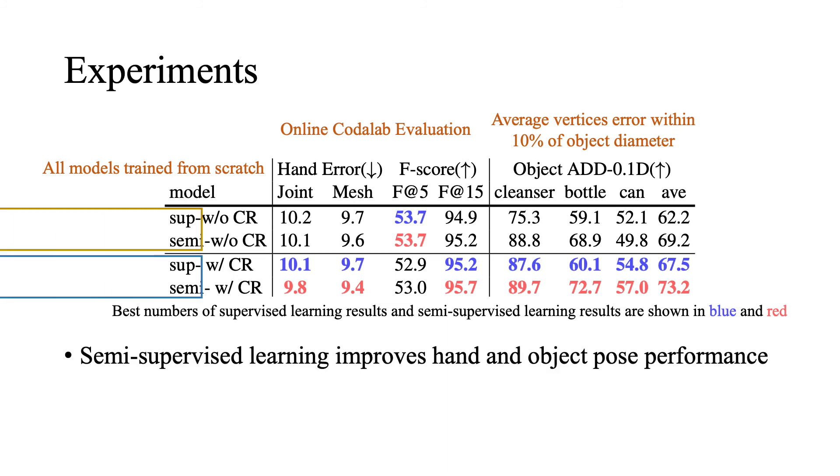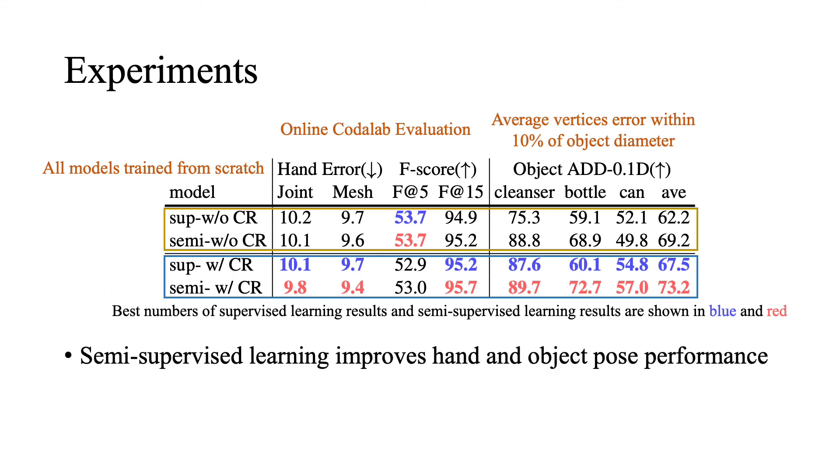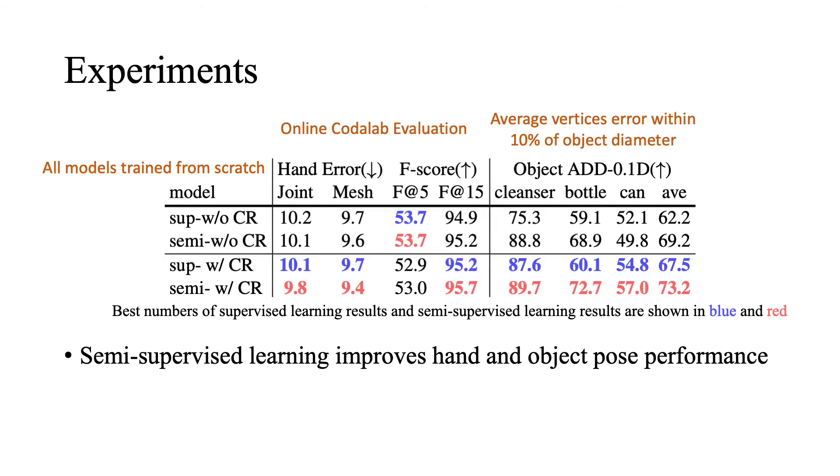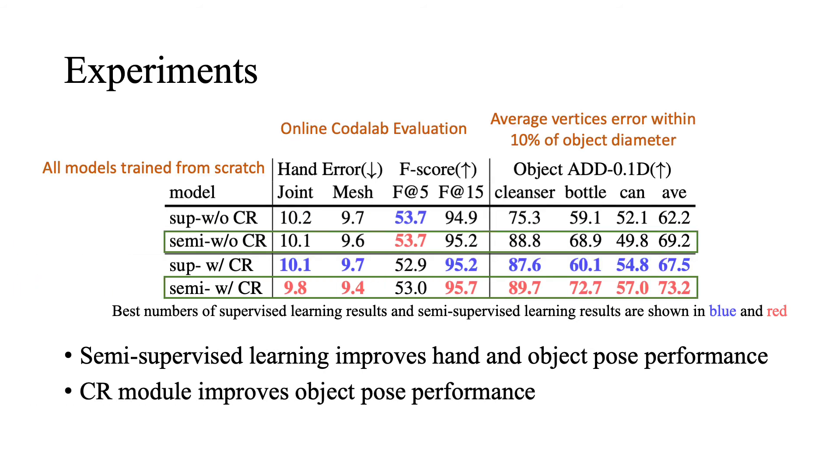As shown in the table, semi-supervised learning improves both hand and object pose estimation with or without using the contextual reasoning module. It can also be seen that the contextual reasoning module helps improve object pose significantly.